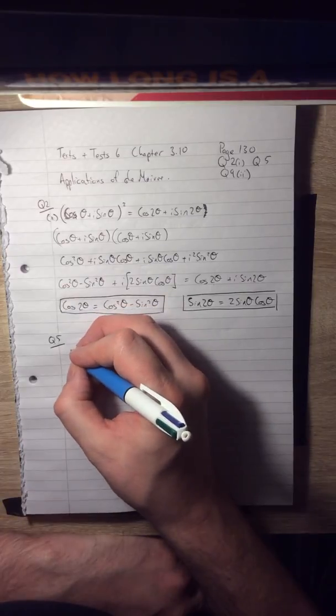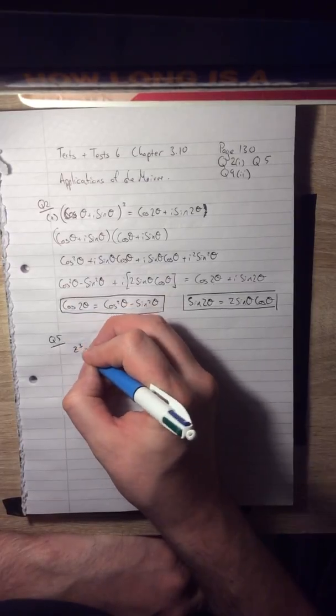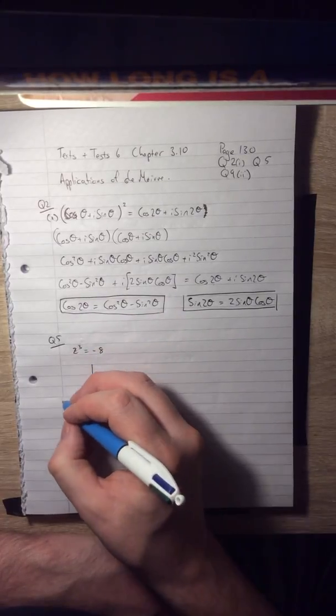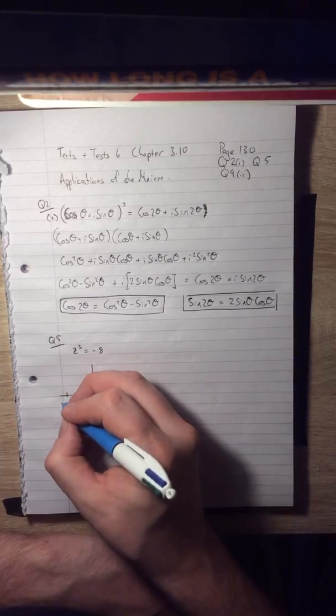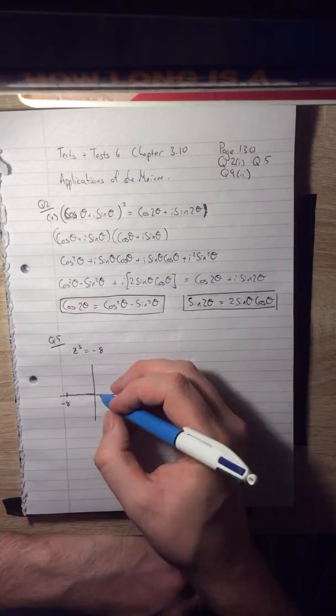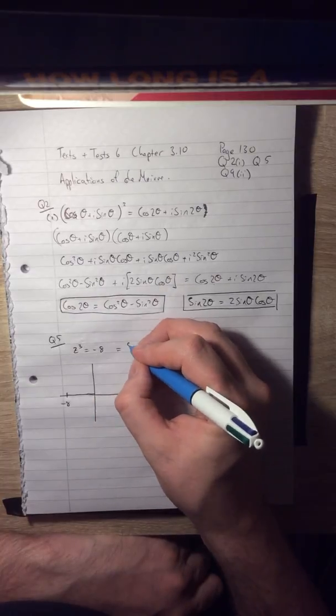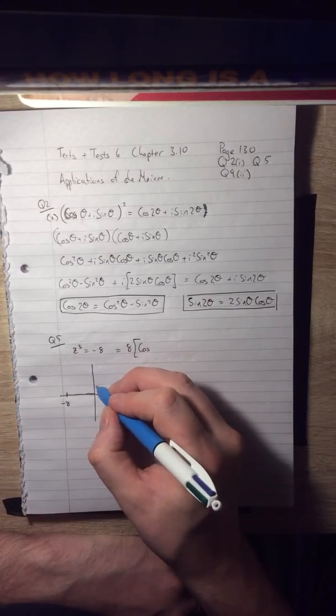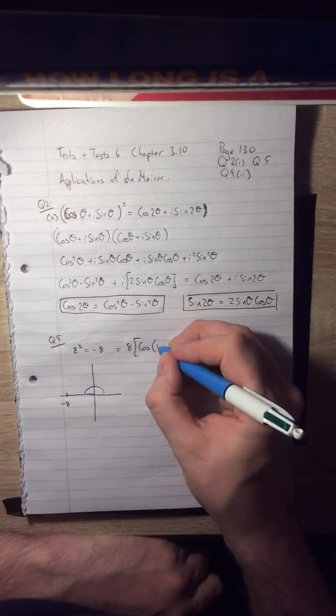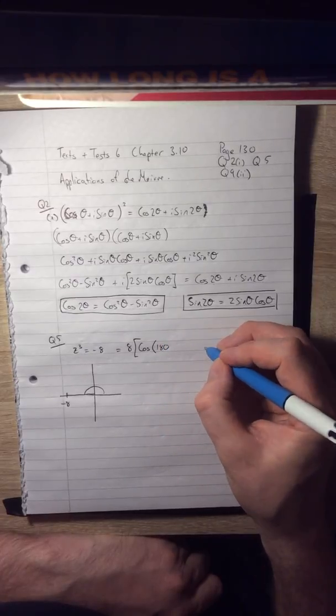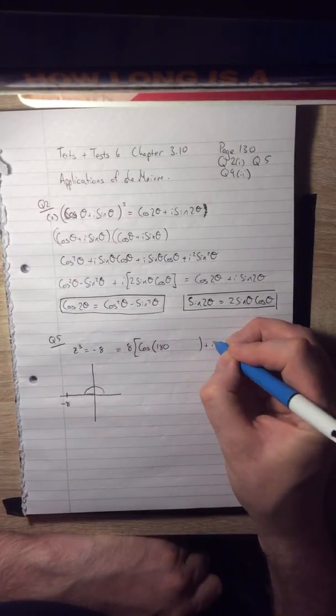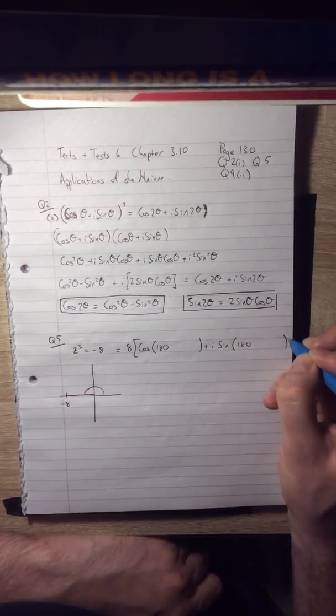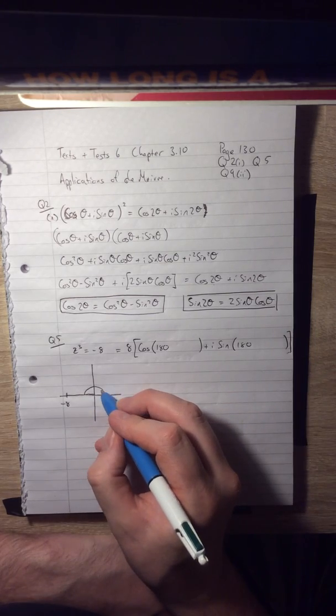So z³ is -8. Well, if I want to put that into general polar form, what I would say is -8, its distance from the origin is obviously 8. So in polar form that's going to be 8, and then you're going to say cos of, the argument here is 180, plus i sin 180. Now I've left a gap there. The reason for that is that argument is 180, or if you were to say 180 + 360, it could be 540.